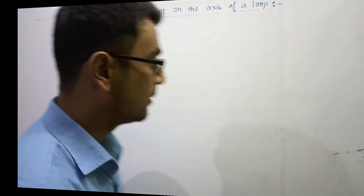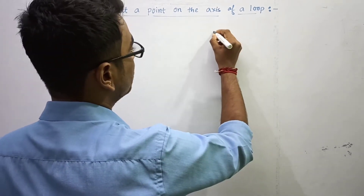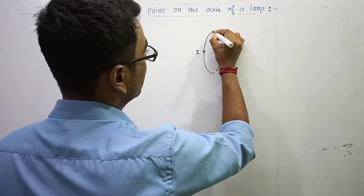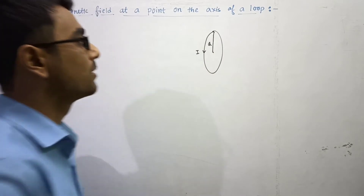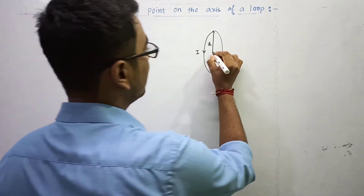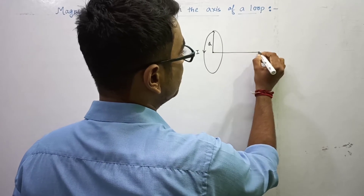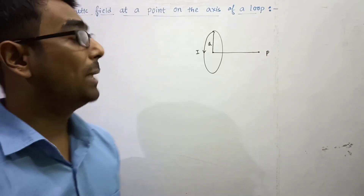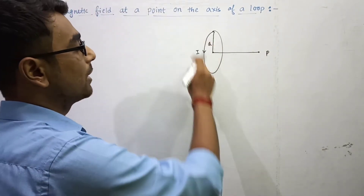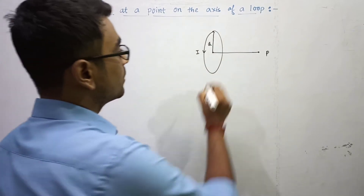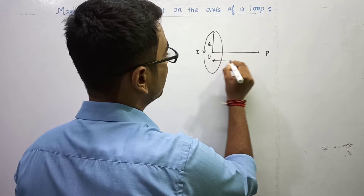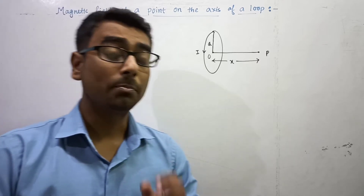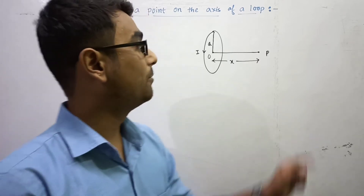Let's start. Suppose a current-carrying loop with current I, whose radius is a. Now at an axial point, suppose point P — we are going to find the magnetic field at point P because of this current-carrying loop. Suppose the distance from the center to point P is x. Now we use Biot-Savart law to find the magnetic field at point P.